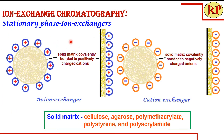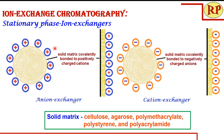For any chromatography, we require a stationary phase and a mobile phase. Here the stationary phase is an ion exchanger, which can be an anion exchanger or a cation exchanger. It is comprised of a solid insoluble matrix like cellulose, agarose, polymethacrylate, polystyrene, or polyacrylamide, which is covalently bonded to fixed ions. In the case of an anion exchanger, it is fixed to cations, and in the case of a cation exchanger, it is fixed to anions. These are the fixed ions — they are not the exchangeable ions. Further, exchangeable ions will be attached to these fixed ions; the cations will be attracted to negative exchangeable ions, and the anions will attract positive exchangeable ions.